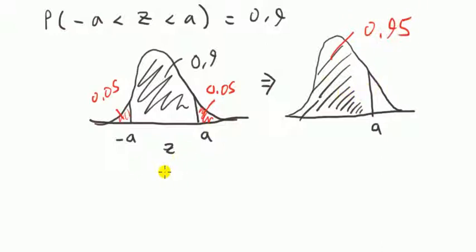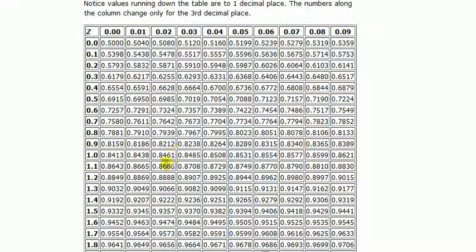So, basically, to find the a, we just need to look up the probability that z is less than a is equal to 0.95.